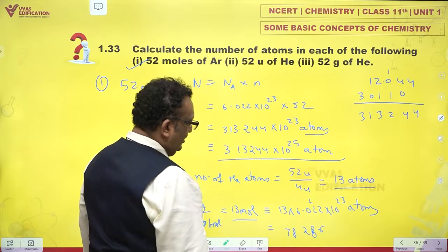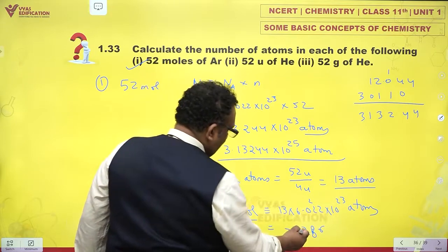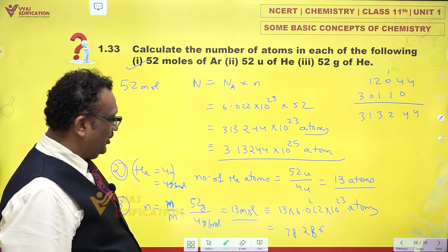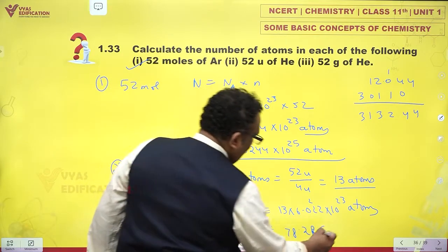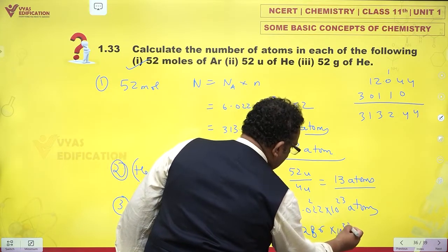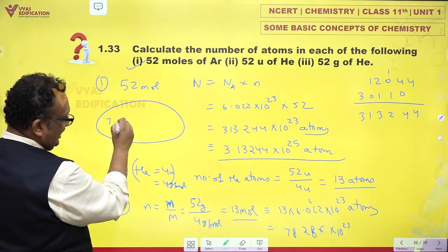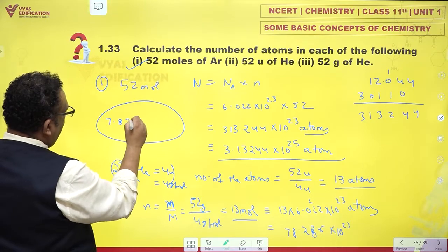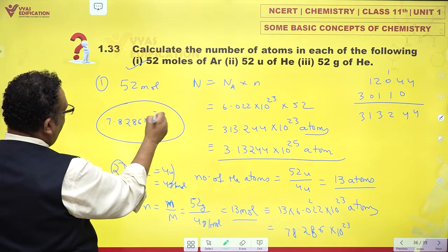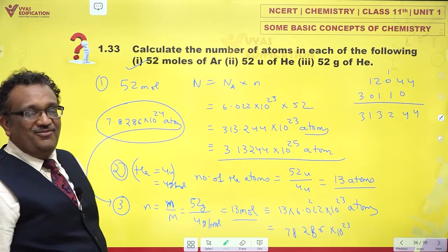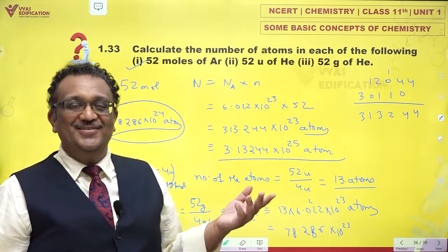Or if you want scientific notation, then 7.8286 × 10^24 atoms. This is answer 3. There we are, simple calculations.